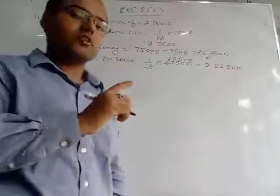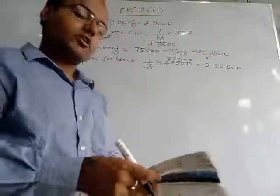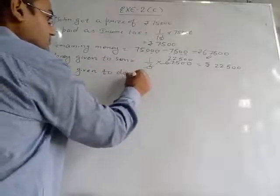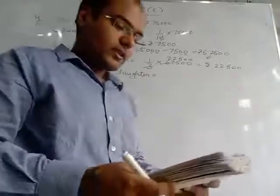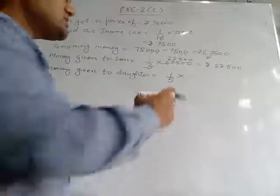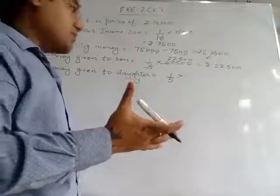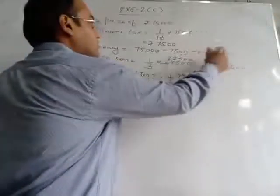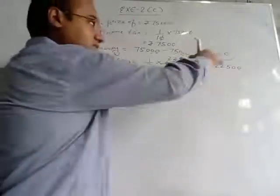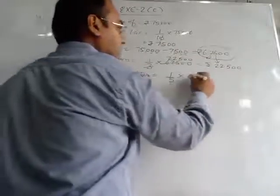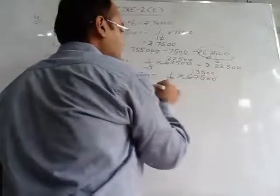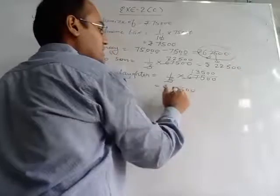He also gave 1/5 to his daughter. Money given to daughter: 1/5 is a fraction. We multiply 1/5 by the remaining amount of 67,500. Cancelling: 67,500 ÷ 5 = 13,500 rupees. So he gave 13,500 rupees to his daughter.